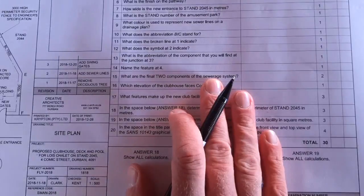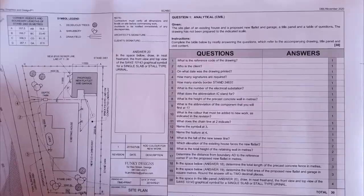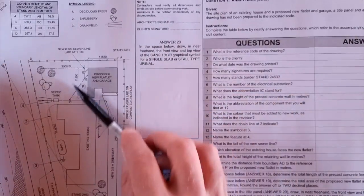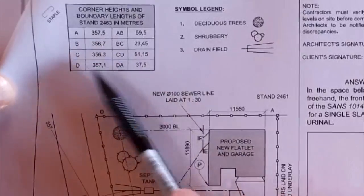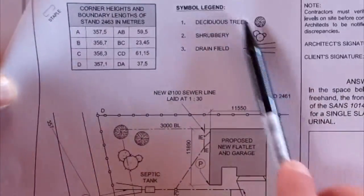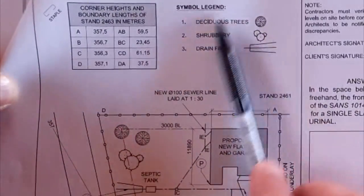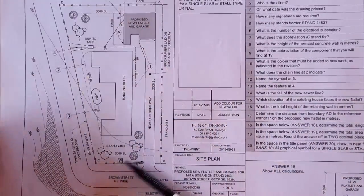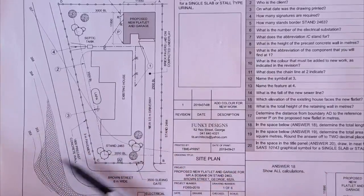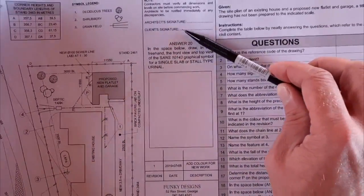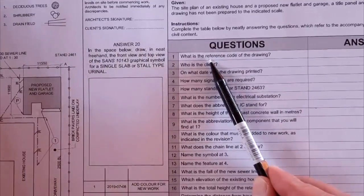Now let's look at Paper 1, November 2020. Question one is also analytical, 30 marks, with a very similar layout to the 2019 paper. On the top left you have corner heights and boundary links from the land surveyor certificate. There's a symbol legend — some new symbols you might not know, but they're labeled. You also have your site plan, title panel, revision section, and two signatures.